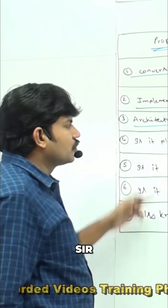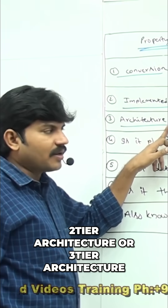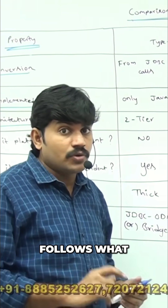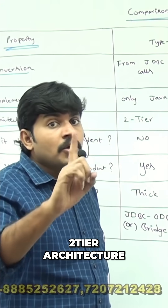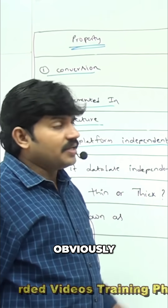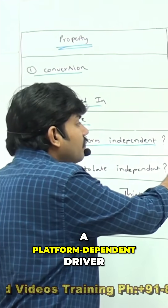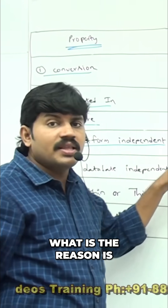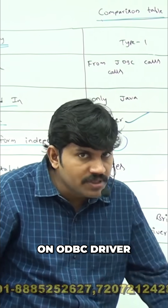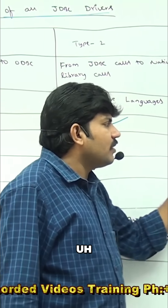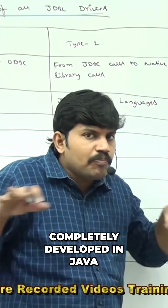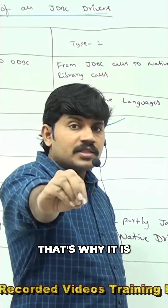Regarding architecture, except for Type 3 driver, all remaining drivers follow 2-tier architecture. Type 1 driver is platform-dependent because it internally depends on the ODBC driver on Windows machines. Type 3 and Type 4 are completely developed in Java, making them platform-independent drivers.